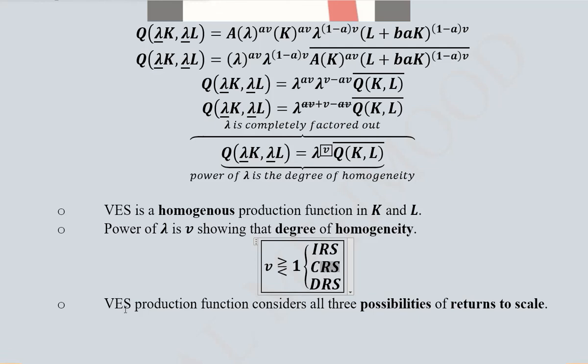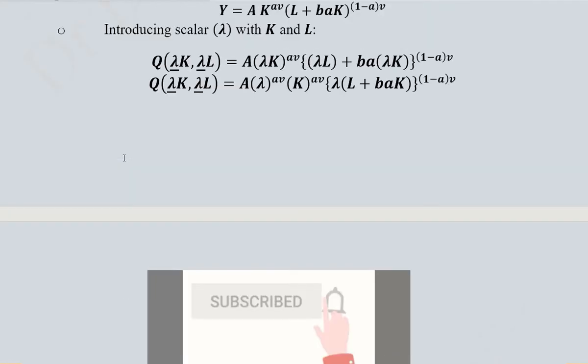So the VES production function is homogeneous and has the possibility of all three cases: increasing returns to scale, decreasing returns to scale, and constant returns to scale.